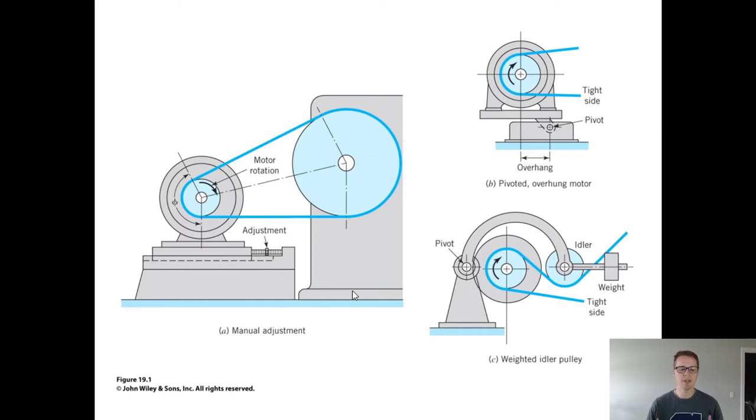Belts in general can be either flat or they can be V-shaped. Flat belts would generally be used in higher speed applications. V-belts would be used in applications where the speed isn't as high, but we want more power transmission capability.